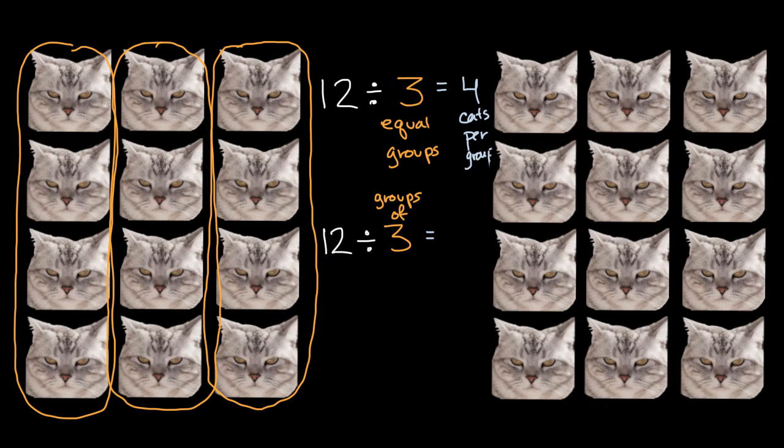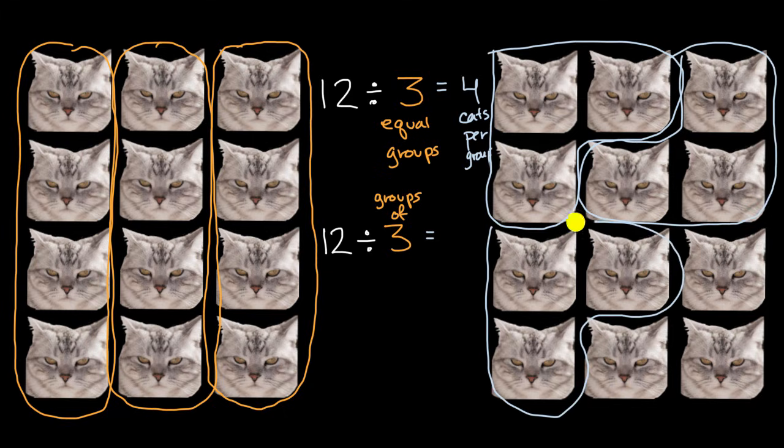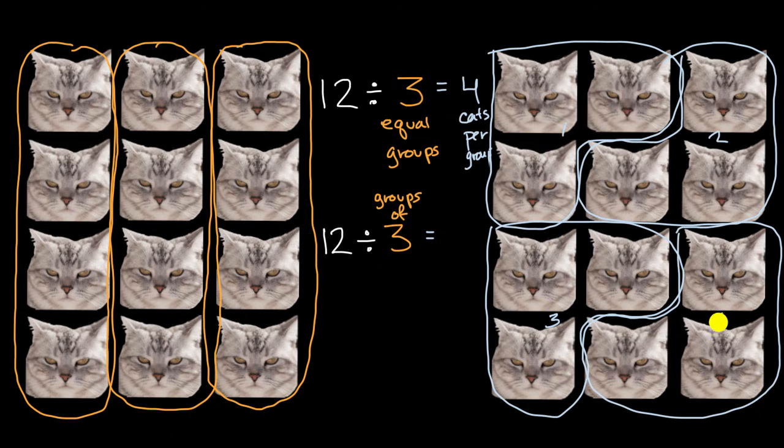So let's do that. Let's create groups of three. So let's see, that's a group of three angry cats right over there. This is another group of three angry cats. This is a group of three angry cats. And then this is a group of three angry cats. So how many equal groups of three angry cats do I have? Well, I have one, two, three, and four equal groups. So if I want to take 12 angry cats and divide them into groups of three, I end up with four equal groups.